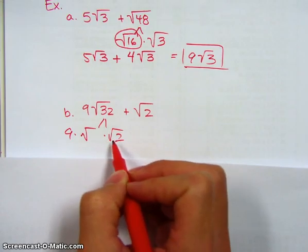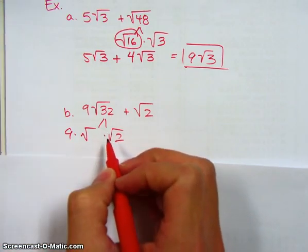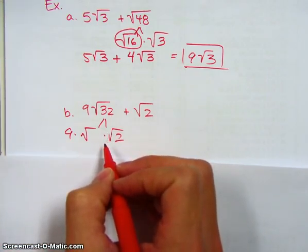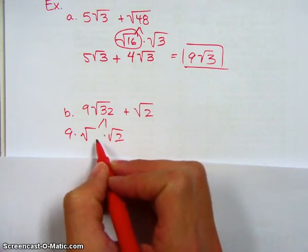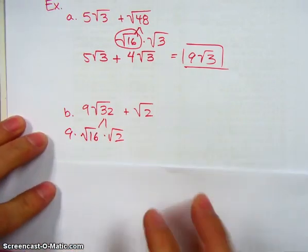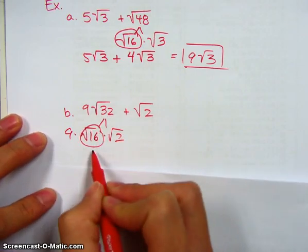What times 2 gives me 32? I wonder if anybody in my class knows. What times 2 gives me 32? 16. There's my lovely 16. There you go. All right, so square root of 16 is 4.